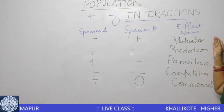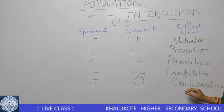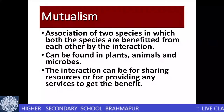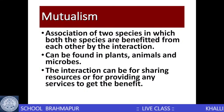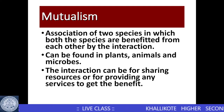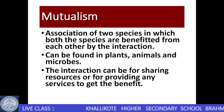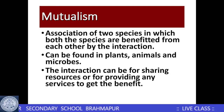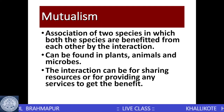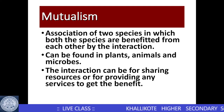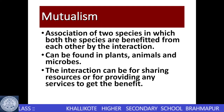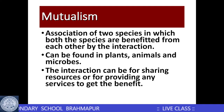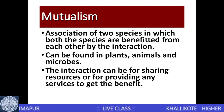Let us begin with mutualism. Mutualism is an association between two species in which both species are benefited from each other by the interaction. Mutualism can be found in many plants, animals, as well as microorganisms. This type of interaction can involve sharing of resources or providing services in exchange for benefits.